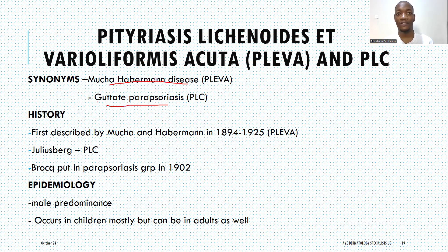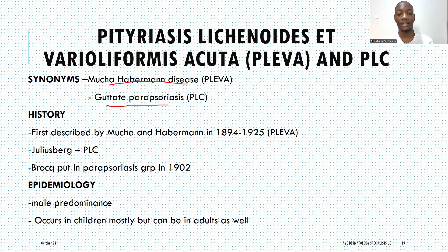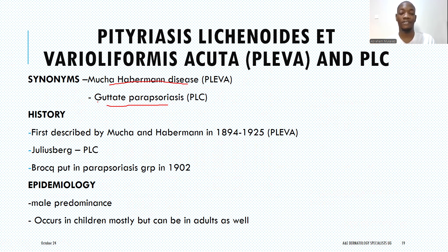Starting with the history, PLEVA was first described by Mucha and Habermann — two scientists — which is why the disease was named after them. This description was given between 1894 and around 1925. PLC was also described by Julius Parkes around the same period. Then Brooke came around in 1902 to place it in the classification of papulosquamous disorders. As mentioned in a previous video, Brooke classified entities including psoriasis, lichen planus, pityriasiform dermatoses like pityriasis rosea, small plaque parapsoriasis, large plaque parapsoriasis, PLEVA, and PLC.